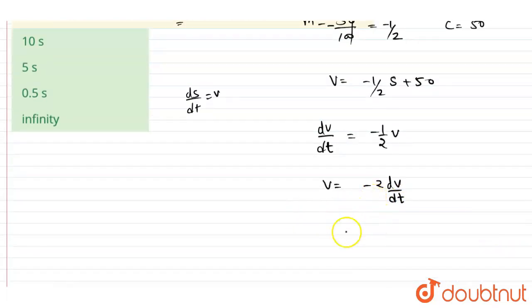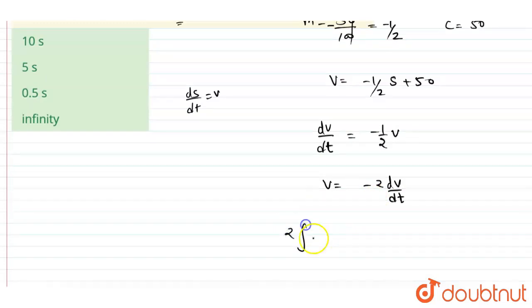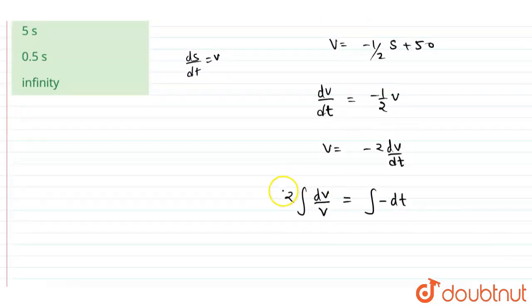We can write integration of dv by v should be equals to integration of minus 2 dt. So if we talk about for this, let's say, let us try to put the powers.